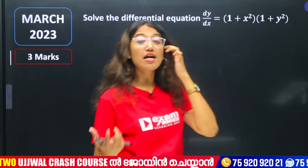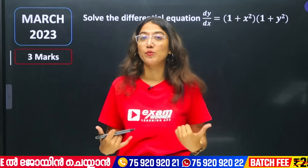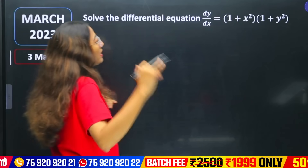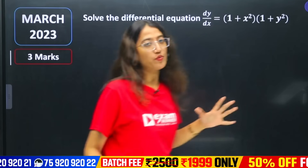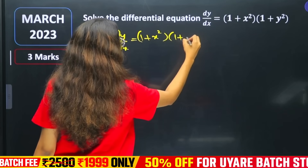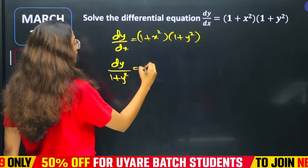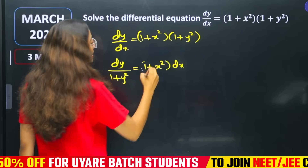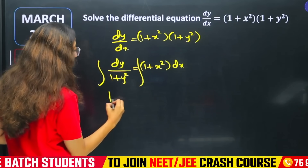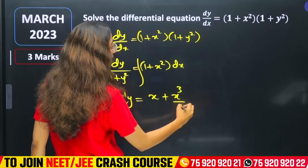Let's choose the variable separable form. We separate variables: dy/(1 + y²) on the left and dx/(1 + x²) on the right, then integrate. The integral of dy/(1 + y²) gives tan⁻¹y, equal to x³/3 + c. That is the solution using the variable separable form.